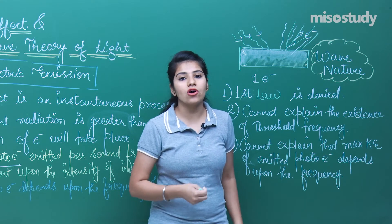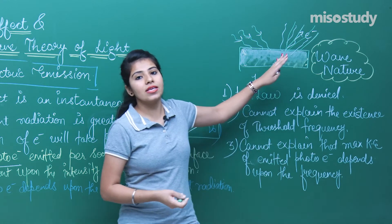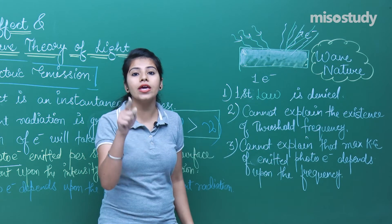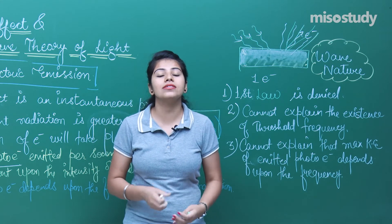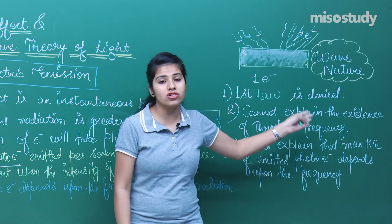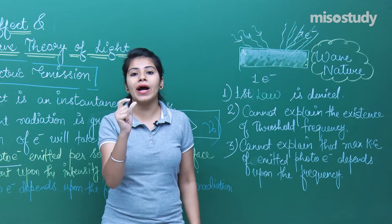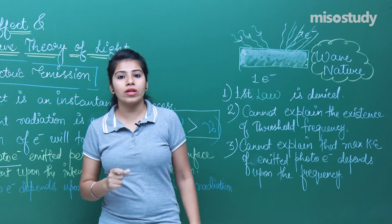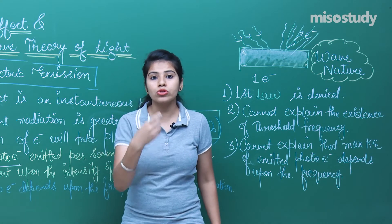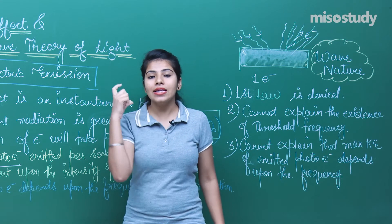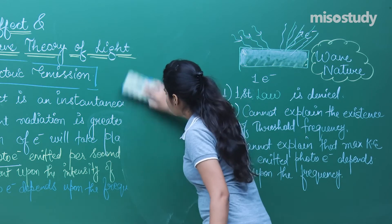Light is not showing wave nature here, so light is showing particle nature. The brilliant scientist Einstein concluded: if light is not showing wave nature, then light is showing particle nature, meaning the radiation is formed by small packets. These packets were called quanta, and together they are called photons. We say that light is composed of photons.